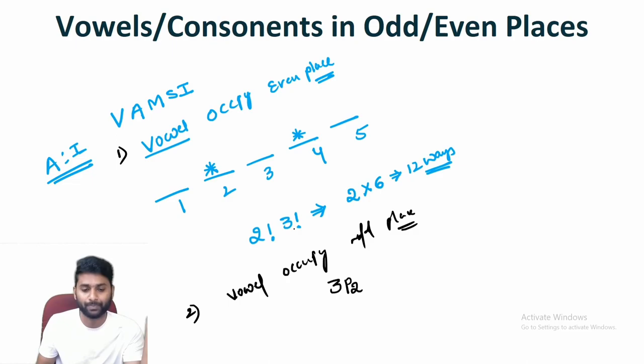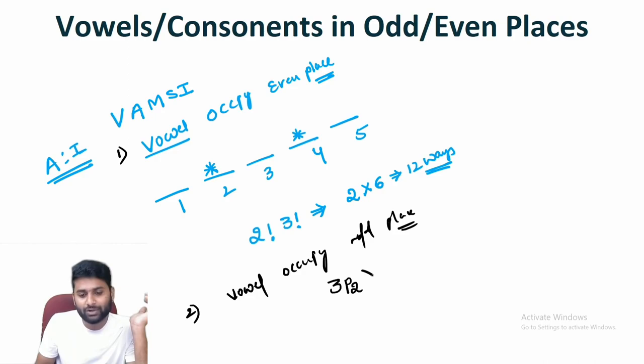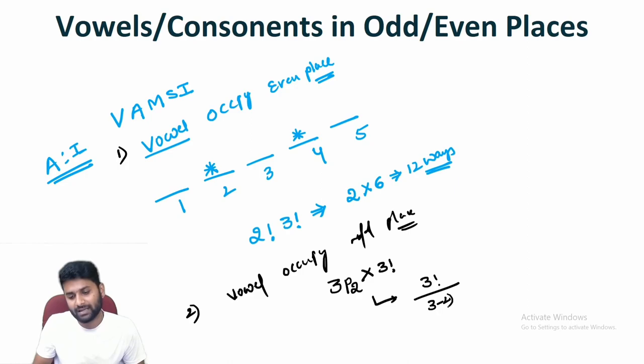Out of three odd positions, we occupy two vowels, so one position is left. Along with the two even places, three places are left for the three consonants. That arrangement is 3!. So 3P2 × 3! = 3!/1! × 3! = 6 × 6 = 36 total ways.